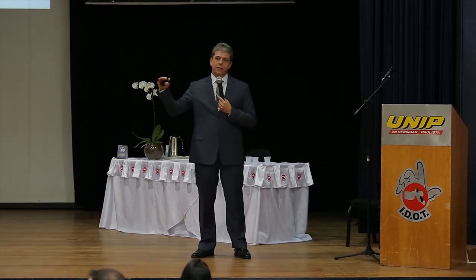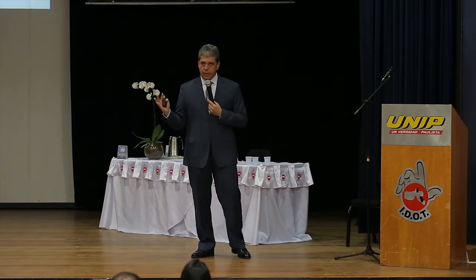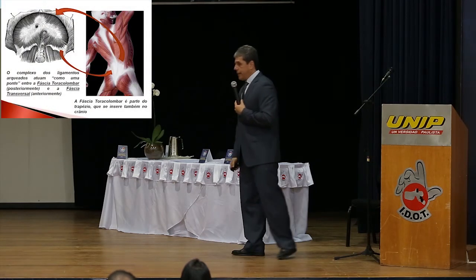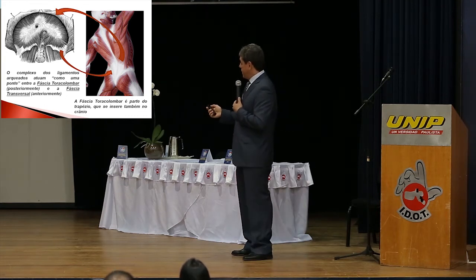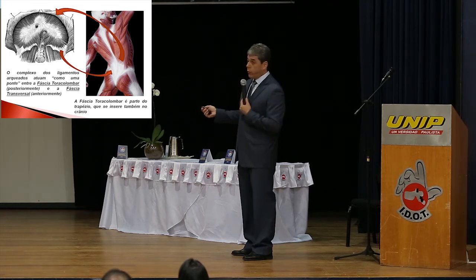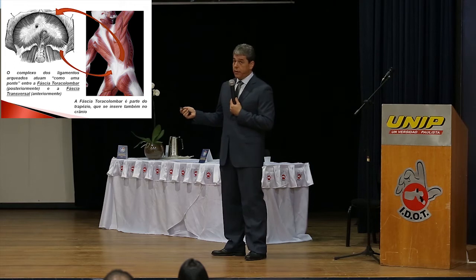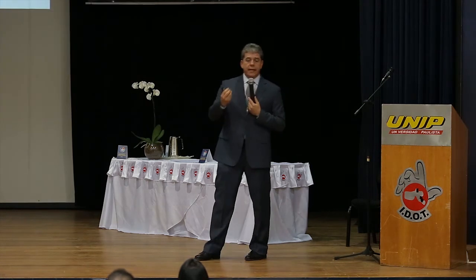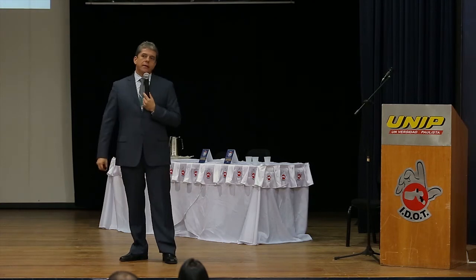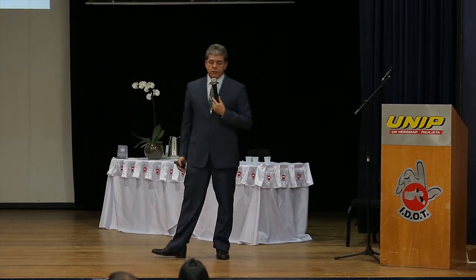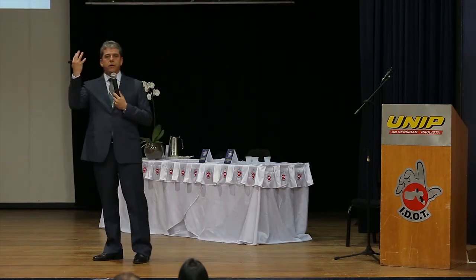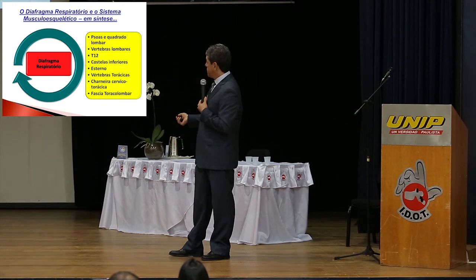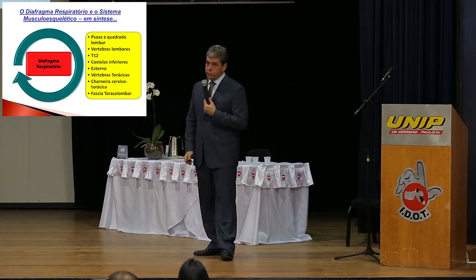Só de existir, preso, o diafragma já estabelece inúmeras correlações anatômicas. E se estabelece relações anatômicas, estabelece relações funcionais. Em relação ao sistema músculo-esquelético, o diafragma funciona como uma ponte entre a fáscia transversa do abdômen com a fáscia tóraco-lombar. A fáscia tóraco-lombar é parte integrante dos músculos do complexo do trapézio, e o trapézio ainda tem inserção no crânio. Então, o diafragma se liga à fáscia tóraco-lombar, que se liga ao trapézio, que se liga ao crânio.